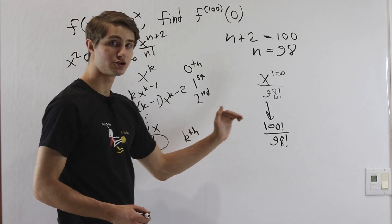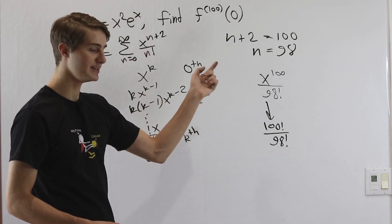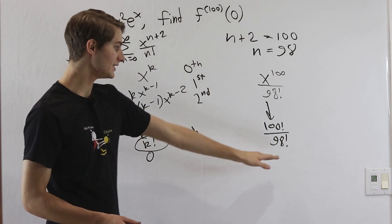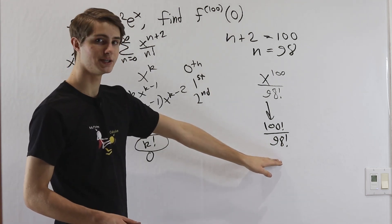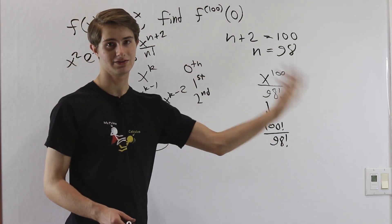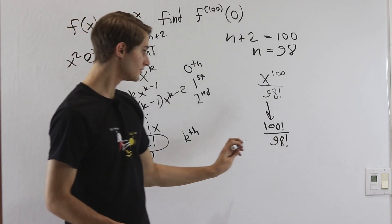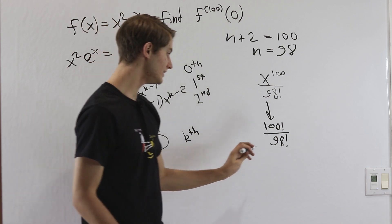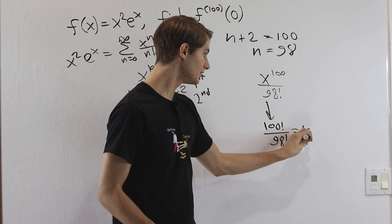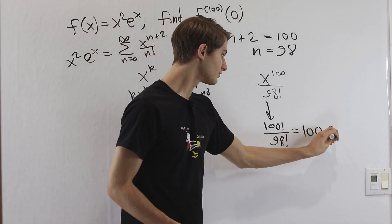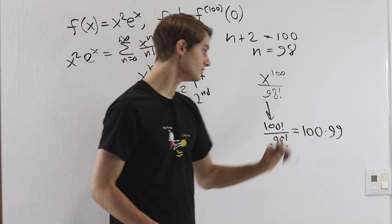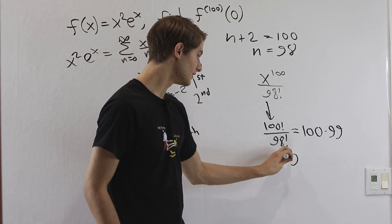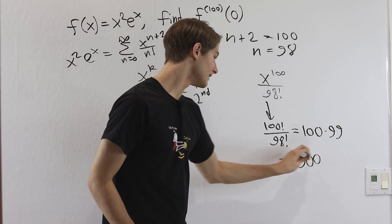100 factorial is 100 times 99 times 98 times 97 times 96 and so on, while 98 factorial is 98 times 97 times 96 and so on. The 98 factorial cancels with most of 100 factorial, leaving only the first two terms: 100 times 99, which equals 9,900. Therefore, our answer is 9,900.